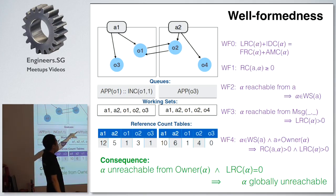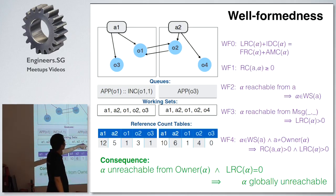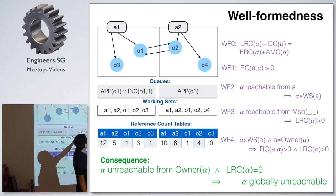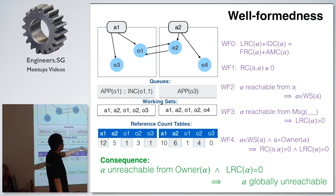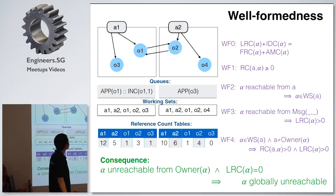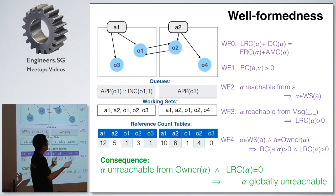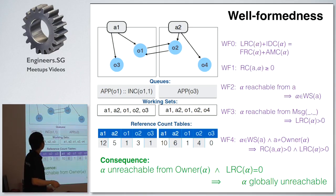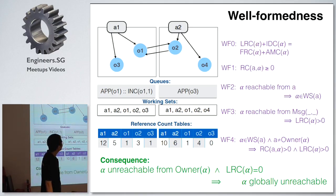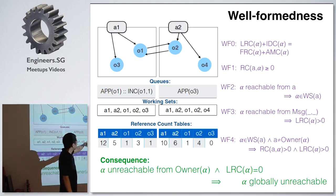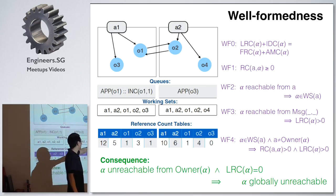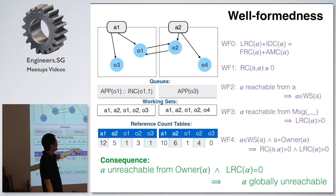The key invariant is WF0, which says that the local reference count of an object equals the sum of the foreign reference counts, adjusted for increment/decrement messages and application messages in flight. The rest are fairly intuitive — for instance, WF3 says that if an object is reachable from some message in a queue, it cannot have a count of zero, otherwise it would be collected before reaching its destination, which would break things.